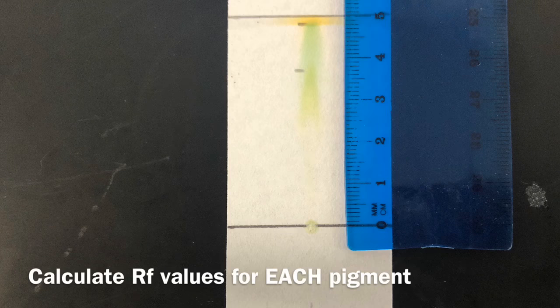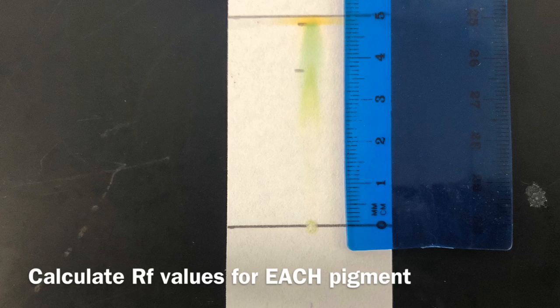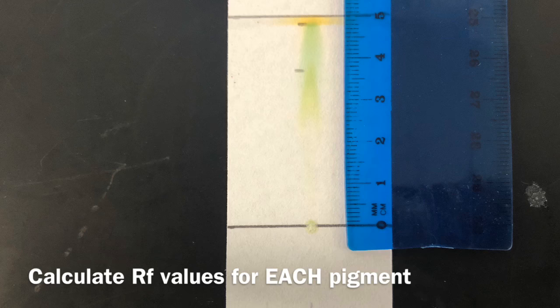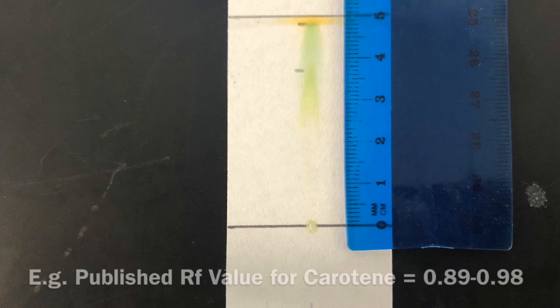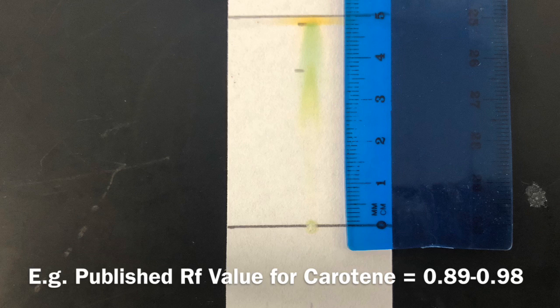Once you've calculated the RF values for each pigment that you observe on your chromatogram, you can compare it against known published RF values in order to identify the pigments on your chromatogram and therefore the pigments in your leaf. For example, the published RF value for carotene tends to be between 0.89 and 0.98, so if you obtain a number within this range, and it tends to be a yellow-orange color, it's likely to be the pigment carotene.